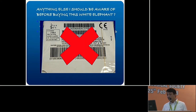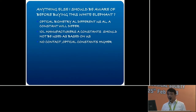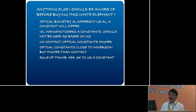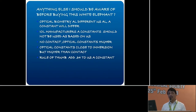Let me demonstrate with an example. The rule of thumb — published by Dr. Hill — for those starting out: since there is no contact with optical biometry, the optical constants will be slightly higher than the ultrasonic constant and close to immersion values. The rule of thumb is to add about 0.3 to 0.4 to the A-constant calculated by ultrasound to get the optical biometry A-constant. This is just a rule of thumb and depends on the formula.